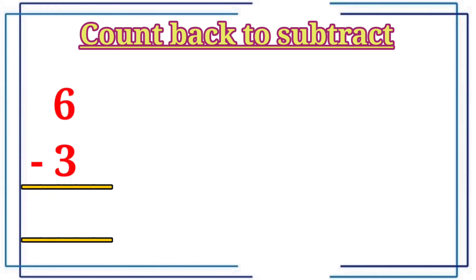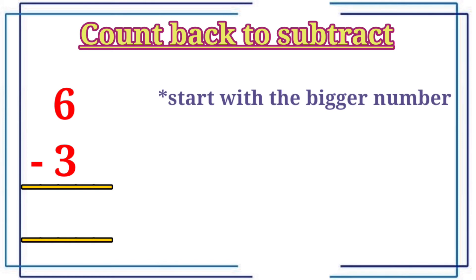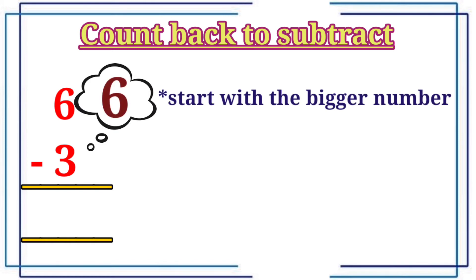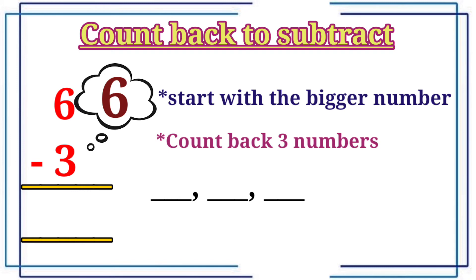Then, to find the answer, six minus three. We will start with the bigger number, six. Then count back three numbers: five, four, three. Therefore the answer is three.